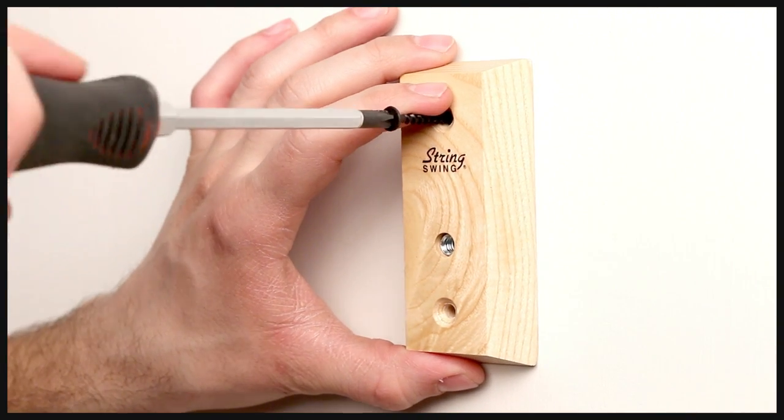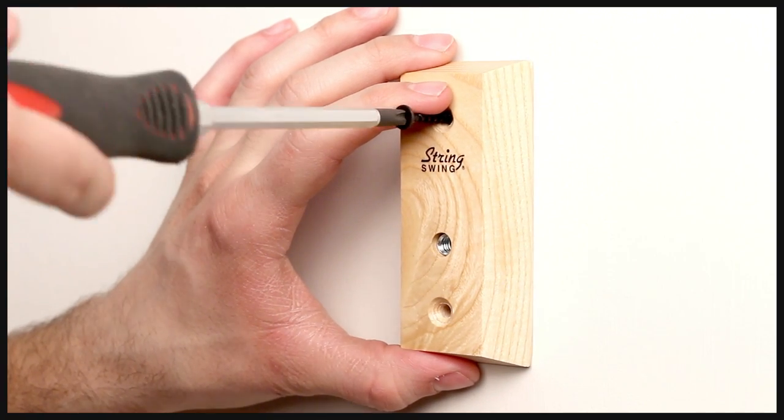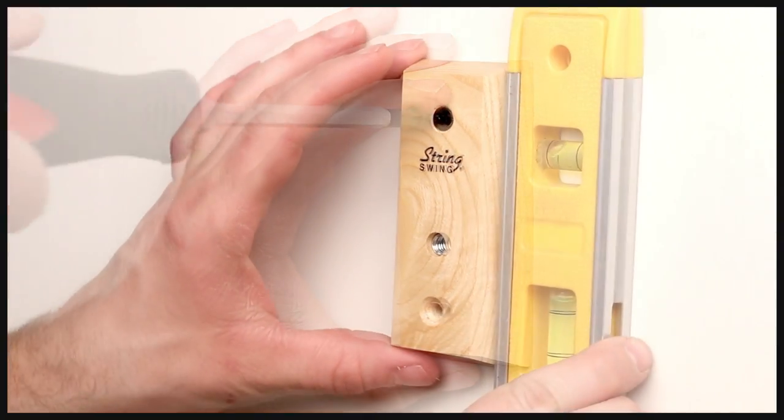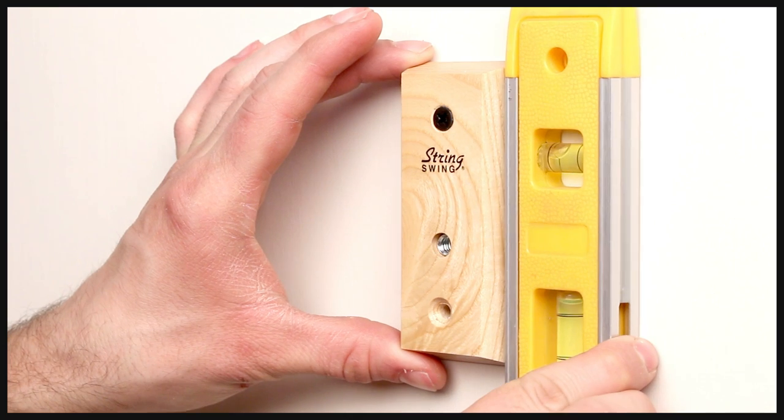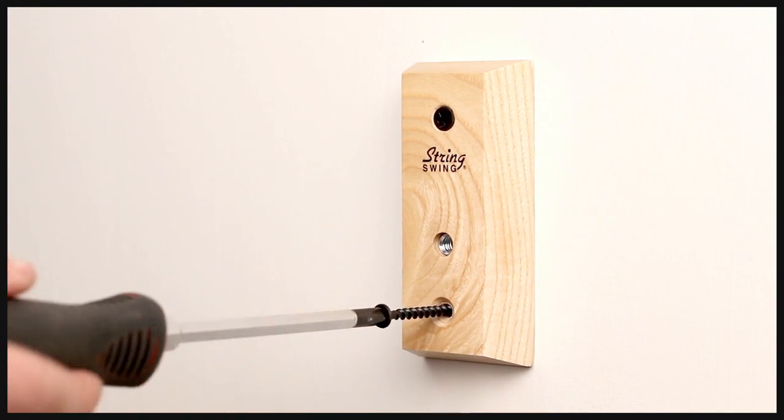You should be able to do this easily by hand with a screwdriver. Use a level to make sure the block is straight before you add the second screw.